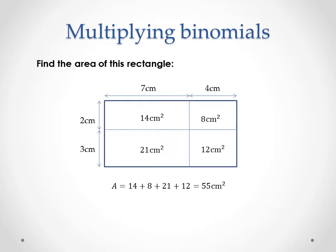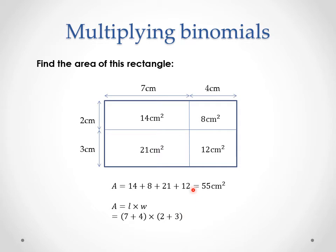But we've got an easier way of doing this, don't we? We have that area is length times width, where length is 7 plus 4 and width is 2 plus 3. So 7 plus 4 is 11, 2 plus 3 is 5, 11 times 5 is 55 — exactly what we had before.